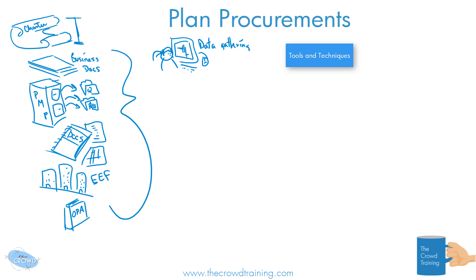We need to make some decisions — whether or not it makes sense to go out and get it, or just go ahead and do it ourselves. Is it making sense for us to make it, or just to go buy, or lend, or lease it? That decision has to be made, and that's part of our data analysis.